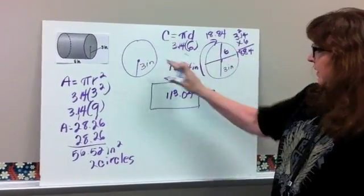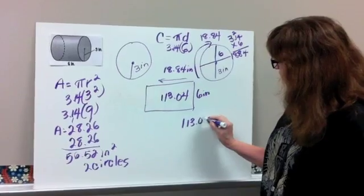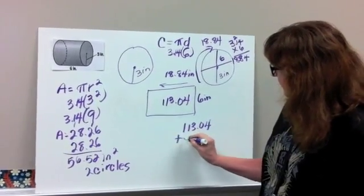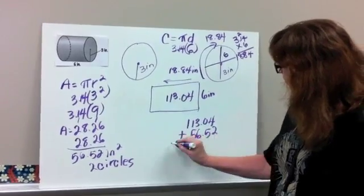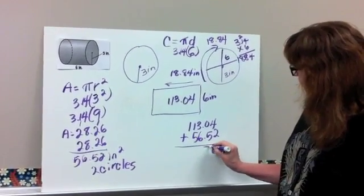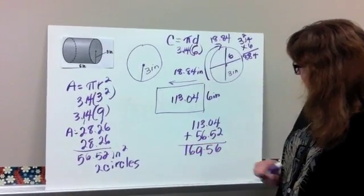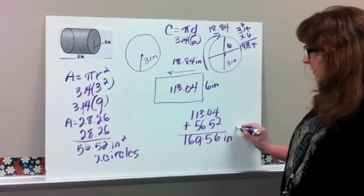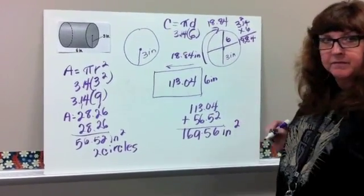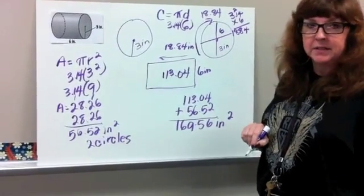We know the area of our two circles, so we just need to add them together. So 113.04 plus 56.52. So we get 169.56 inches squared for the surface area of our cylinder.